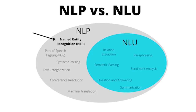Before we begin with SpaCy, we should spend a little time talking about what NLP or natural language processing actually is. Natural language processing is the process by which we try to get a computer system to understand, parse, and extract human language, oftentimes with raw text. There are several areas of NLP: named entity recognition, part of speech tagging, syntactic parsing, text categorization, also known as text classification, co-reference resolution, and machine translation. Adjacent to NLP is Natural Language Understanding, or NLU, where we train systems to do relation extraction, semantic parsing, question answering, summarization, sentiment analysis, and paraphrasing. NLP and NLU are used by a wide array of industries from finance through to law and academia.